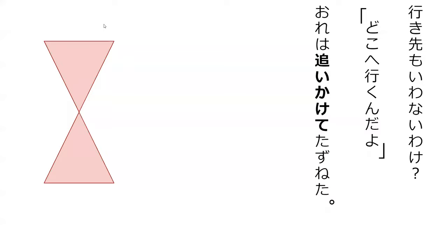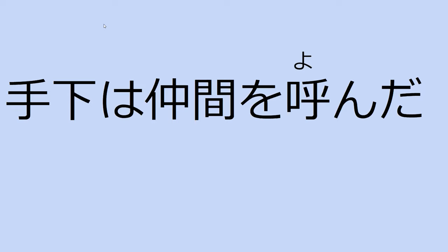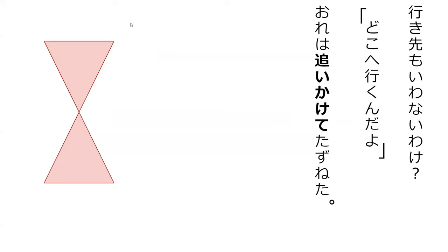Do you know how this word is read? Oikakete. What does kakete mean? To jump on, to chase — in hot pursuit. To chase after and catch up to. We saw oikakeru a lot. So let's go read the line from the book.